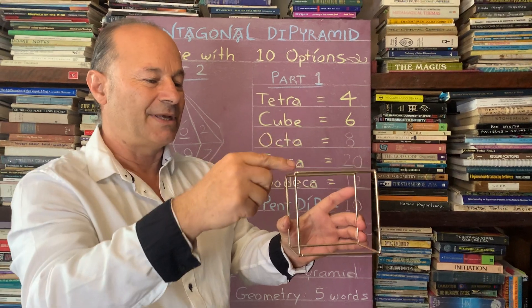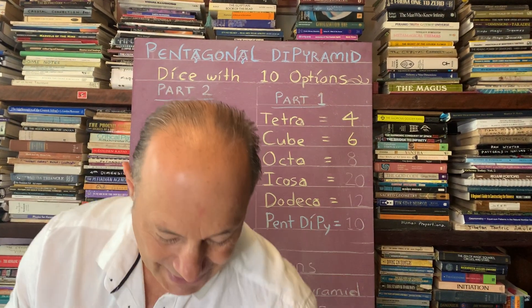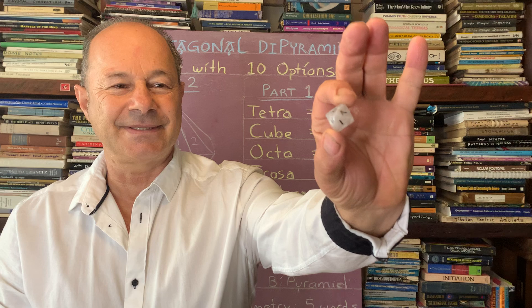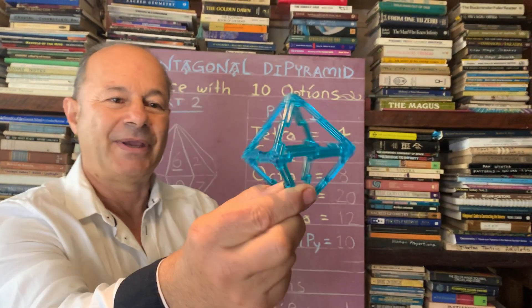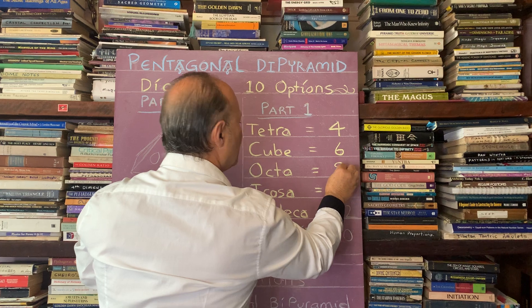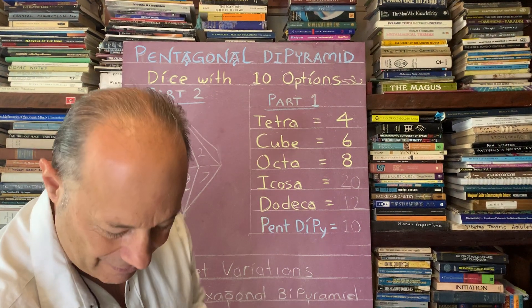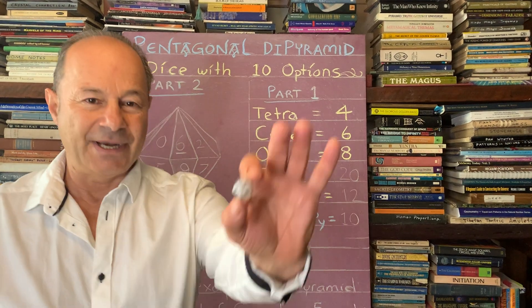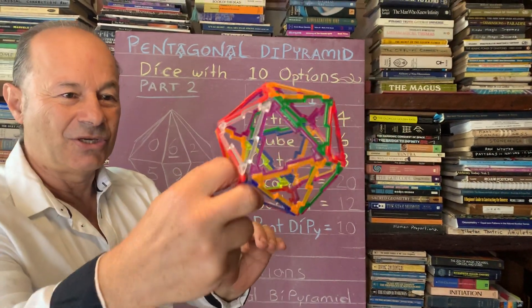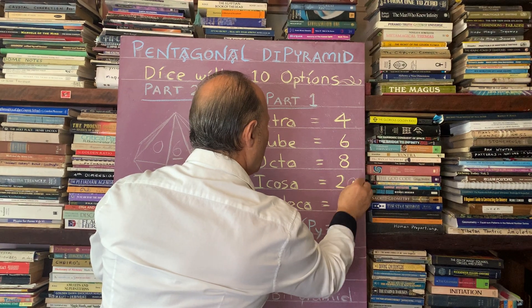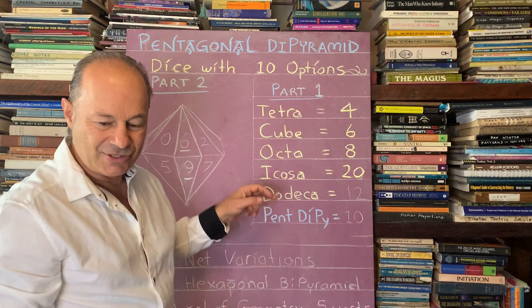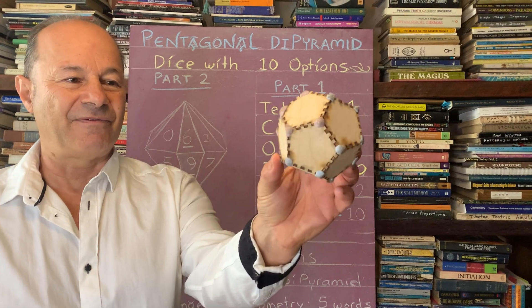The next shape is the octahedron. As a transparent 3D shape it has eight triangular faces, so a die based on it has eight options. One of my favorites is the icosahedron, which as a transparent view has 20 faces — giving 20 options.